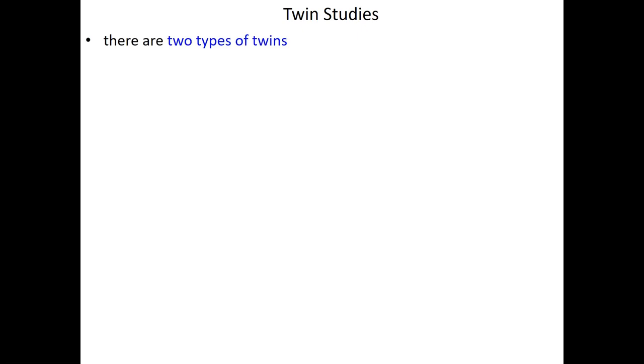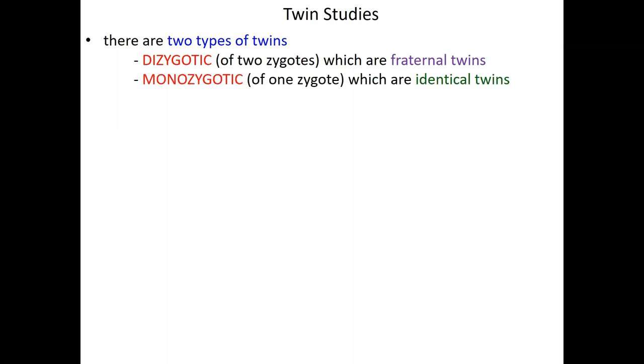We've heard of twin concordance a number of times in this last unit. Let's discuss twin concordance studies specifically so that by the end of the course, we have some understanding of how we can do genetic analyses in humans without true experimentation. There are two types of twins. Dizygotic twins — the biological term for fraternal twins — form when two different eggs released by the mother are fertilized by two different sperm, giving us two different individuals. Dizygotic twins are no more or less related to one another than regular siblings; they just happened to be in the uterus at the same time and grew up in the same household simultaneously.